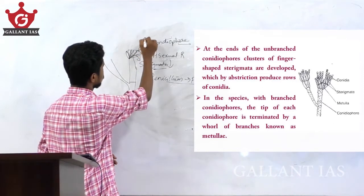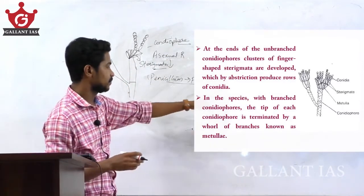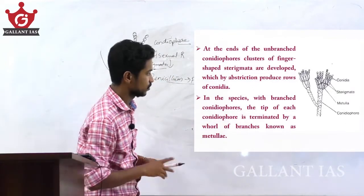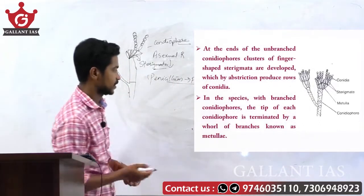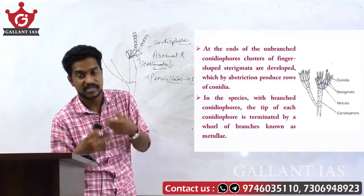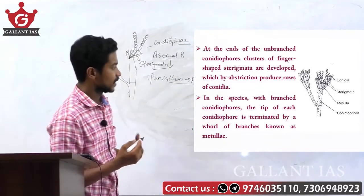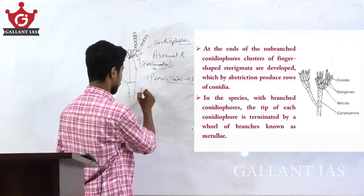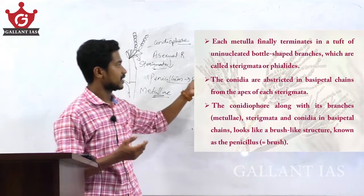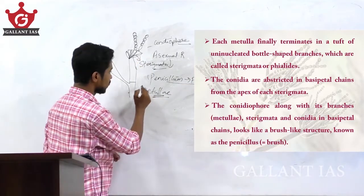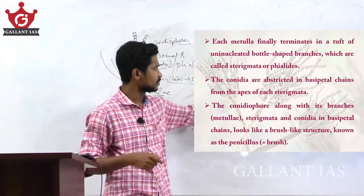The sterigmata produce rows of conidia. In species with branched conidiophores, the tip of each conidiophore is terminated by a wall of branches known as the metula. Each metula finally terminates into a tuft of unicellular, bottle-shaped branches called sterigmata or phialides. Each metula later develops sterigmata, also called phialides.